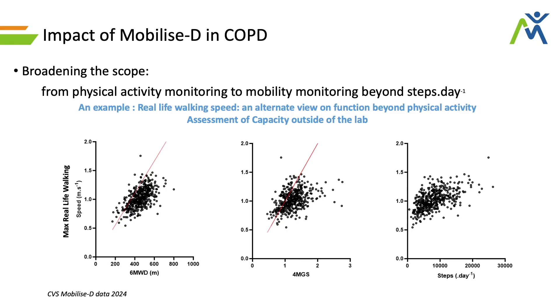Now that the first data are becoming available, we're seeing interesting things. Here I'm showing just one of the DMOs out of the panel of 25, looking at maximum real-life walking speed in these patients. This DMO could provide a home assessment of patients' capacity to walk at higher or lower speeds — an interesting endpoint from a clinical trial perspective where you would improve capacity without bringing patients to the lab.